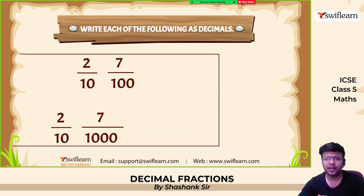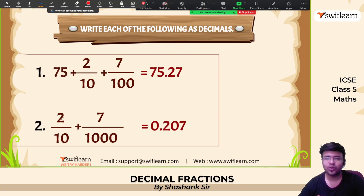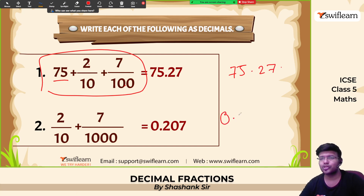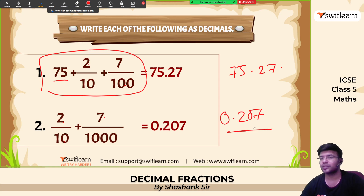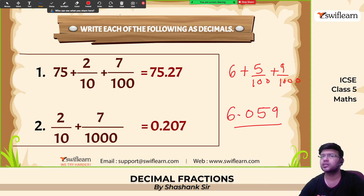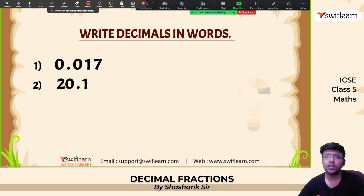Now write each of the following in decimal form. The question was: 75 + 2/10 + 7/100, which is nothing but 75.27. Another: 0.2 + 7/1000 gives 0.207. And 6 + 5/100 + 9/1000 — how to solve this? It is nothing but 6.059. Understood?